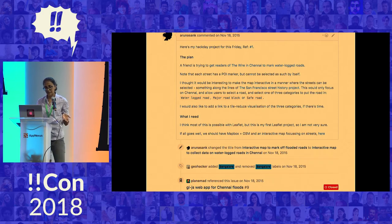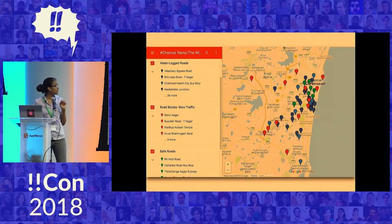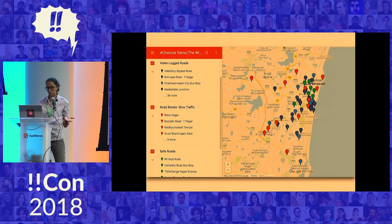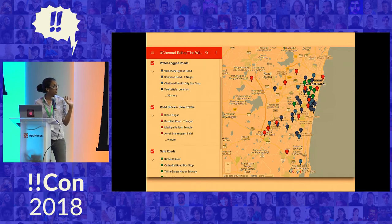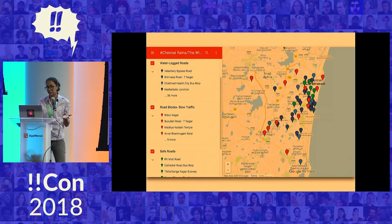At this time, a friend of mine at The Wire, which is an Indian media outlet, was putting together a map based off of a Google Maps base map. He was trying to collect data about waterlogged roads, roadblocks, and safe roads. Because of the limited tooling around Google Maps, I found the design of this app pretty clunky — streets were represented as points. Further, because of the proprietary nature of the tooling and data associated with Google Maps, the license around the data you're adding is a little ambiguous. To fix all of these problems, I decided to make my own version of the flood map.